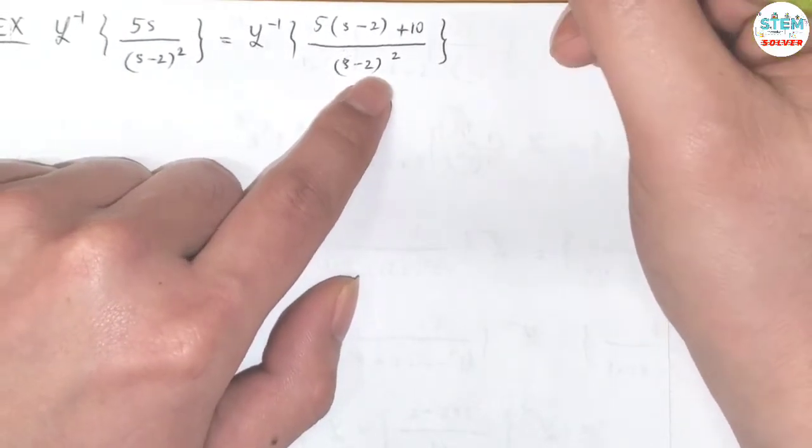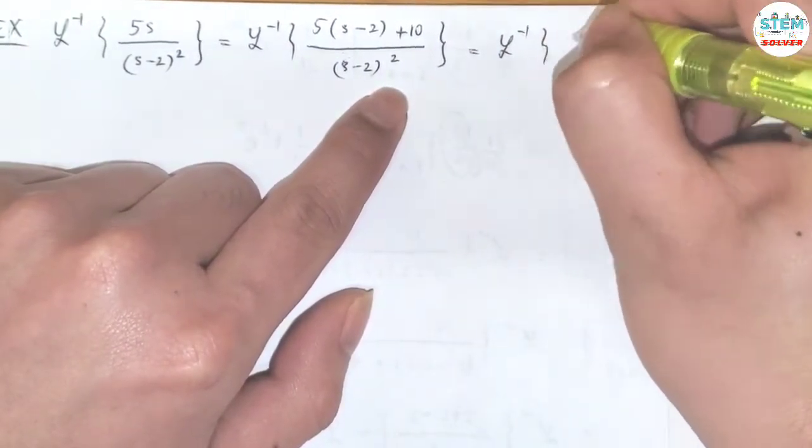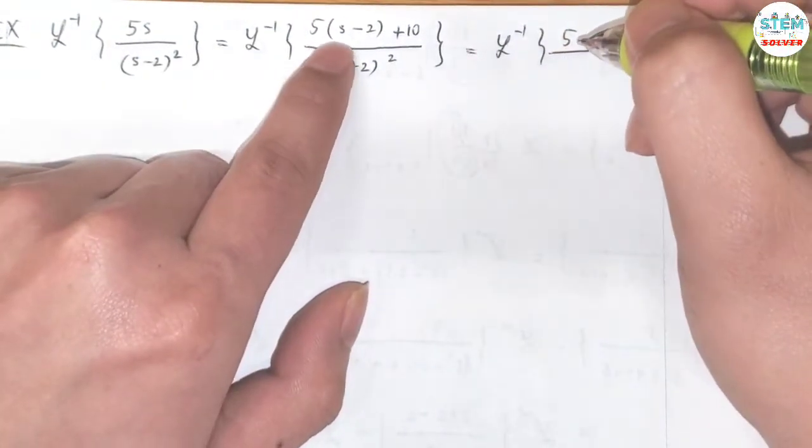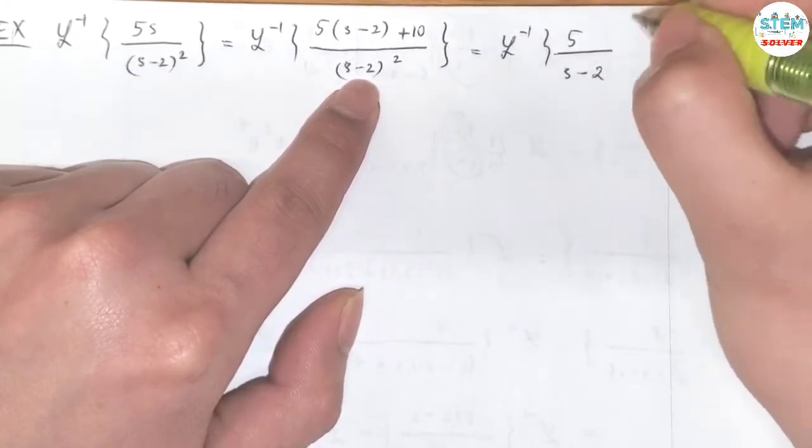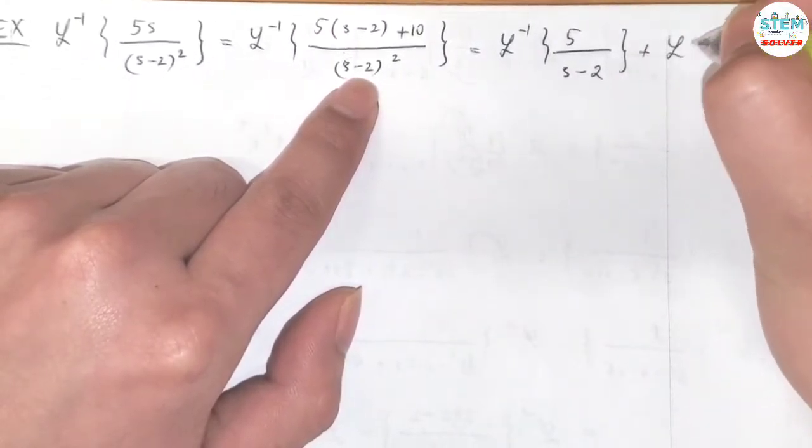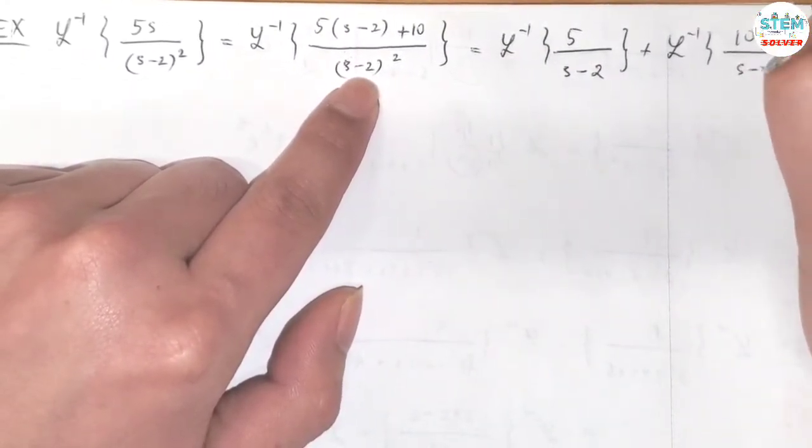Now I'm going to split this out. So I have L inverse of 5 times (s-2) over (s-2) squared, which gives me 5 over (s-2), plus L inverse of 10 over (s-2) squared.